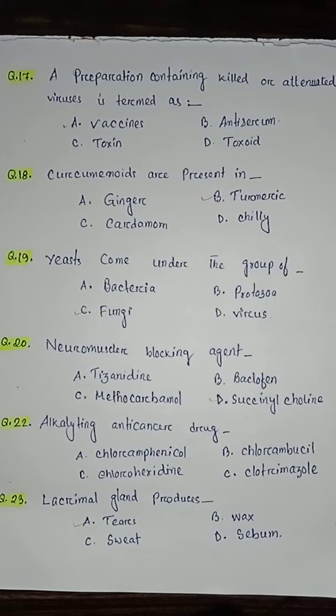Question number seventeen: a preparation containing killed or attenuated virus is termed as — option A vaccine, option B antitoxin, option C toxin, option D toxoid. So the correct answer is option A vaccine.